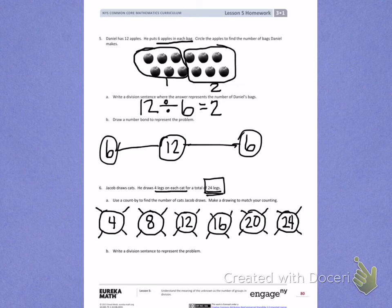There is my picture. When I look at this picture, I can count the number of groups or the number of cats Daniel drew. 1, 2, 3, 4, 5, 6. Daniel drew 6 cats.